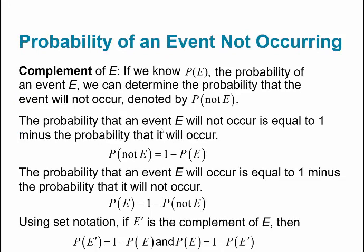The idea of 'not' involves the complement. So the complement of E — if we know the probability of some specific event E happening, we can determine the probability that the event will not occur, which is the probability of not E. So E and not E are complements of each other. The probability that event E will not occur is always equal to 1 minus the probability that it will occur.